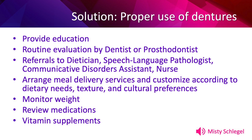So what can the patient or caregiver do once it is determined that their dentures are putting them in a nutritional deficit? Firstly, you can provide education to the patient and/or the caregiver. You provide routine evaluation through appointments with their dentist or prosthodontist. You could make referrals to a dietitian, a speech language pathologist, a communicative disorders assistant, and/or a nurse. You could arrange meal delivery services to customize their meals according to their dietary needs, texture, likes, and cultural preferences. Additionally, monitor their weight, review all of their medications, and provide vitamin supplementation. The objective of the nurse caring for the older adult with malnutrition related to complications with denture use is to provide support to maintain health and quality of life.